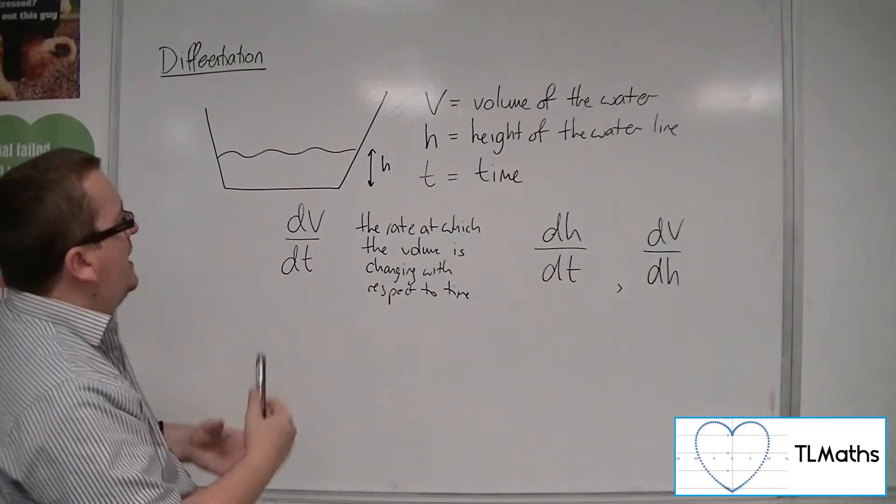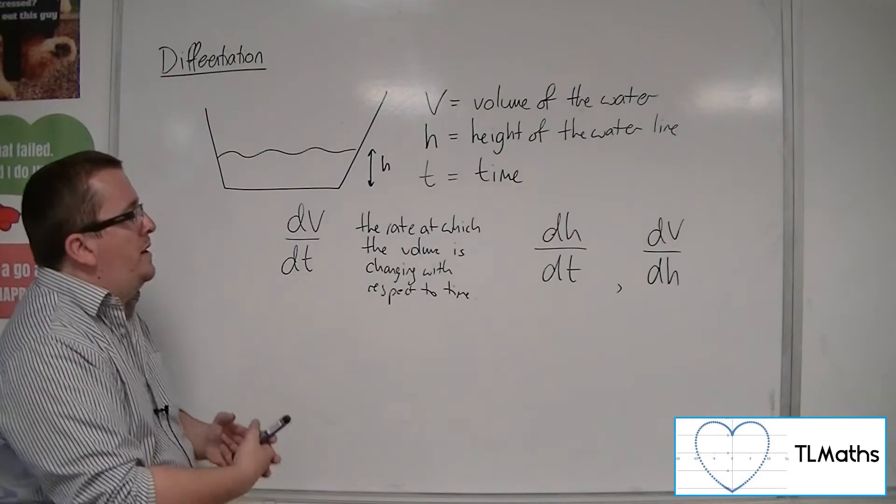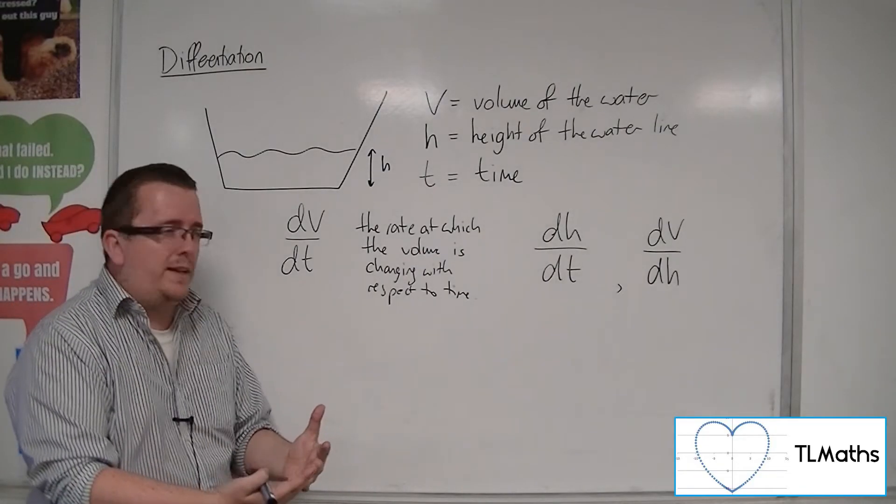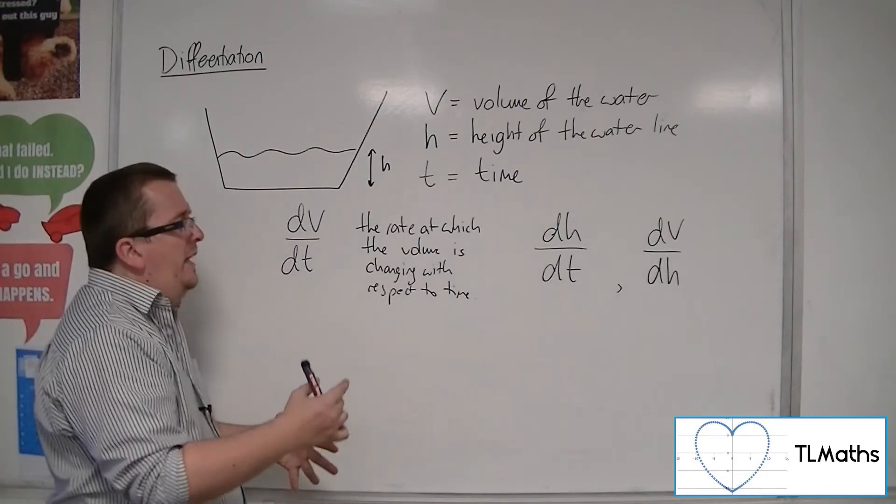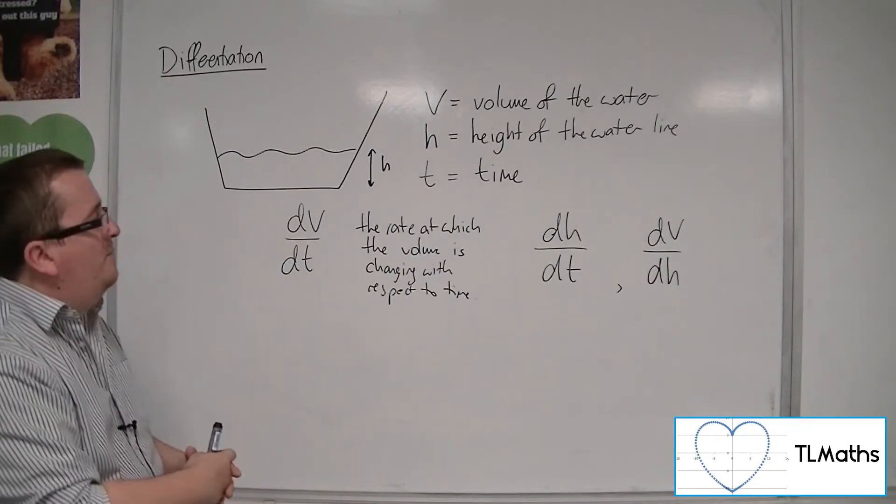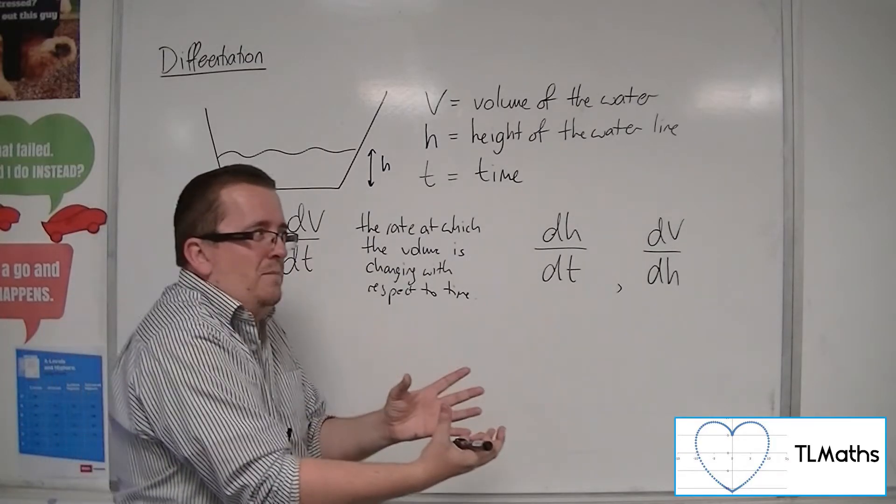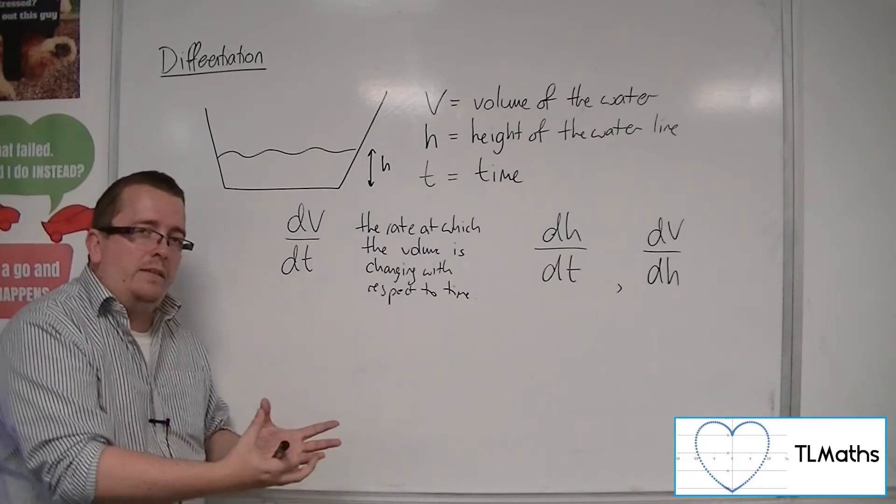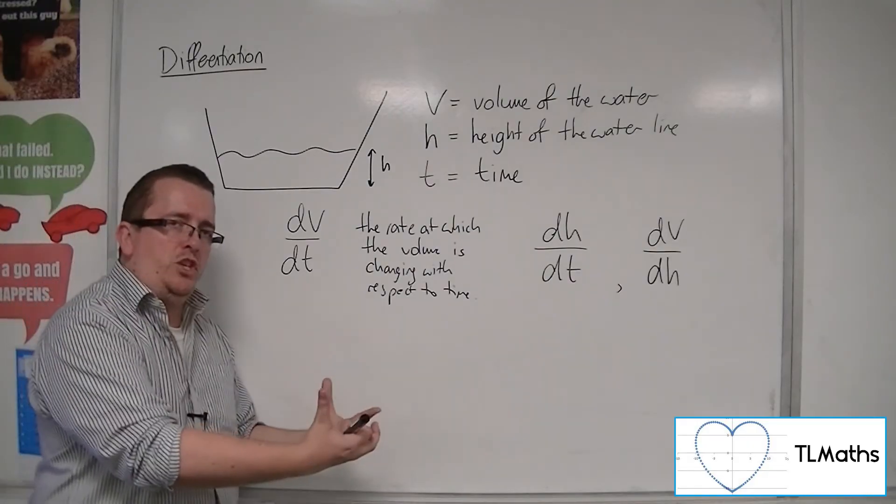You might be thinking, why can't we have dT/dV? Well, I guess you can. You could look at the rate at which the time changes with respect to the volume. But what you need to be aware of is that although we can work that out, it's not contextually a good question to ask. You won't really be asked that, but it makes more sense to ask at what rate is the volume changing with respect to time.